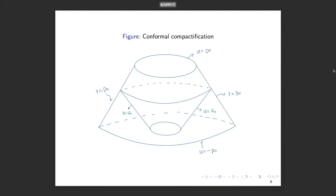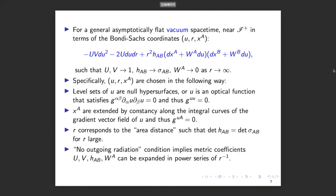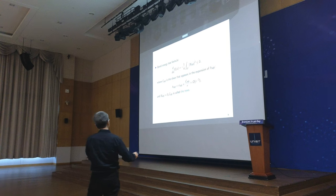This is the first theoretical verification of the wave nature of gravitation. The energy is radiated as a wave along the null direction. For example, if you have one null hypersurface and another null hypersurface, energy can radiate away along these null directions. A very natural question is: what if you use a different coordinate system? This question is quite realistic.